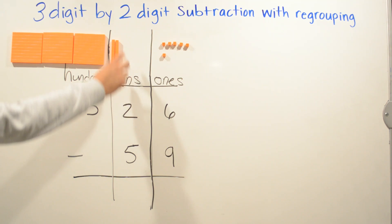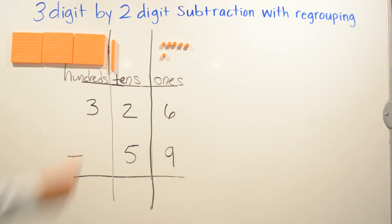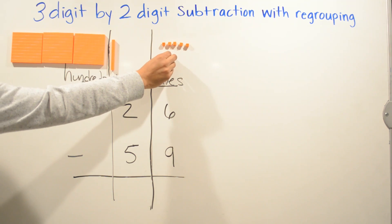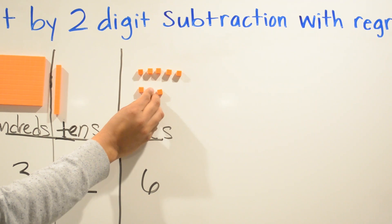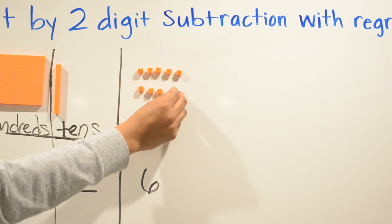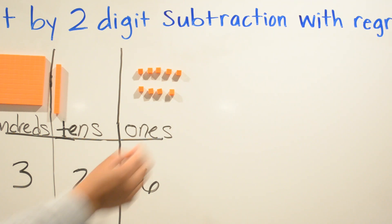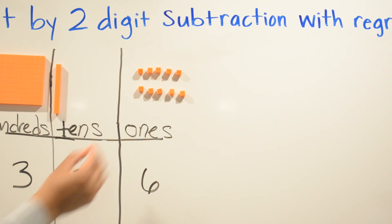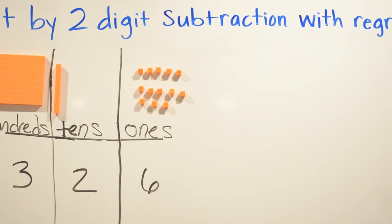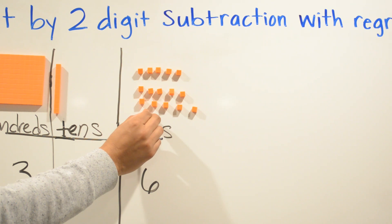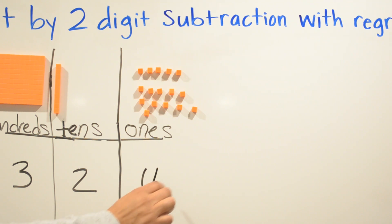So we're going to borrow from the two — we're going to take one out and add ten more to the ones column: one, two, three, four, five, six, seven, eight, nine, ten. So we borrow: this six becomes 16.